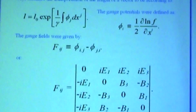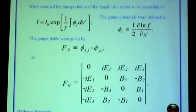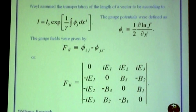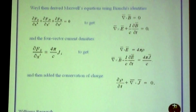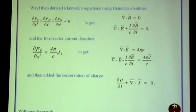What Weyl did was use the length of a vector and a scale factor based upon the gauge potentials. By the way, his work is where the word 'gauge potential' came from. From that, he showed that you can derive Maxwell's equations. Here are the field components of the electromagnetic field that come from that scale factor. He used the Bianchi identity to get two of them, and he used the four-divergence to get two more, and he had conservation of charge.